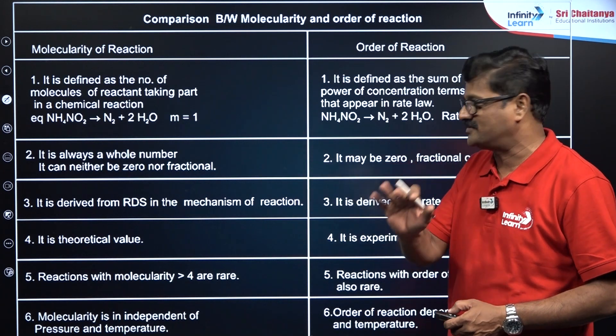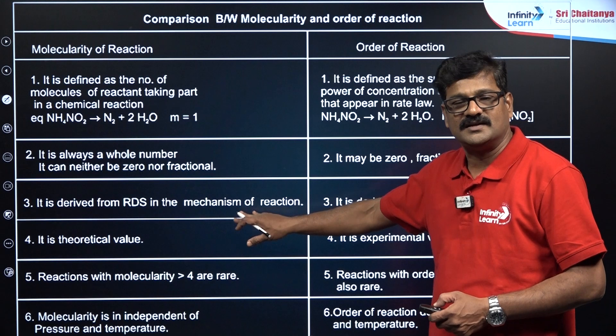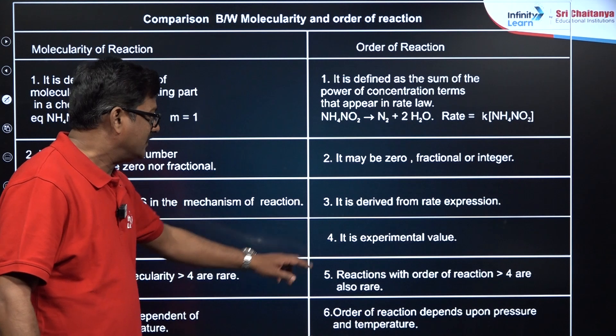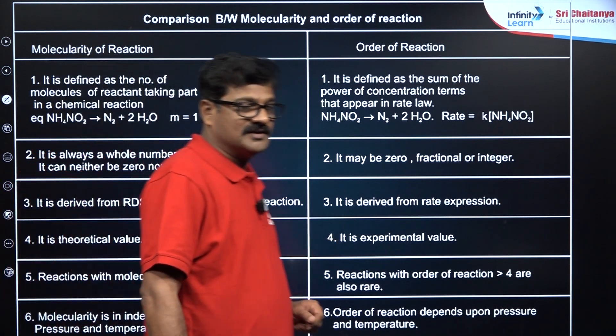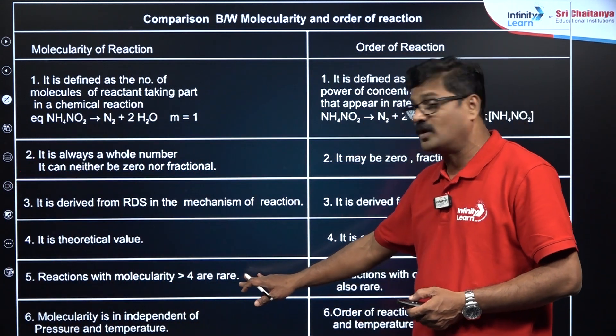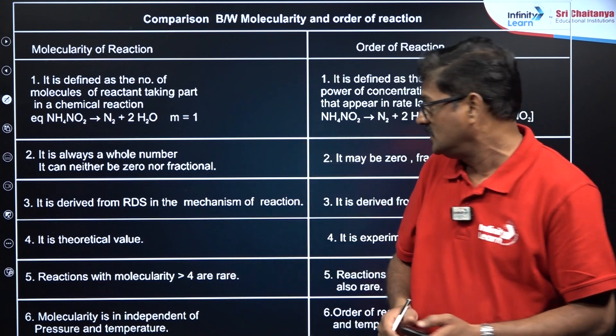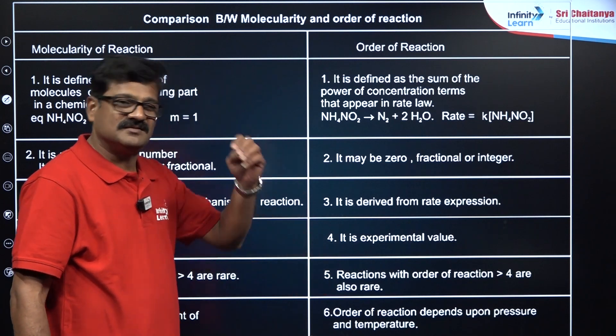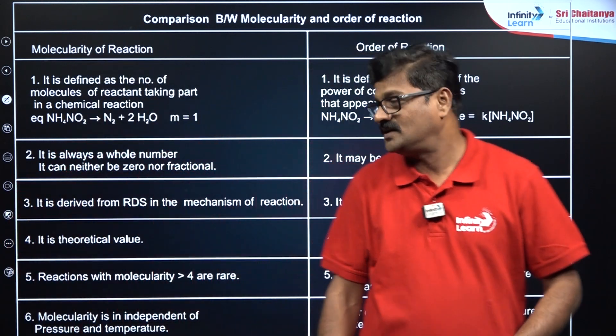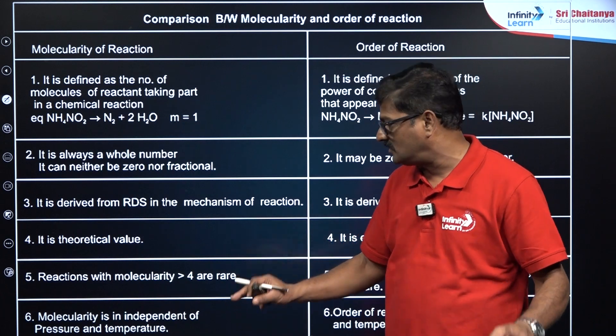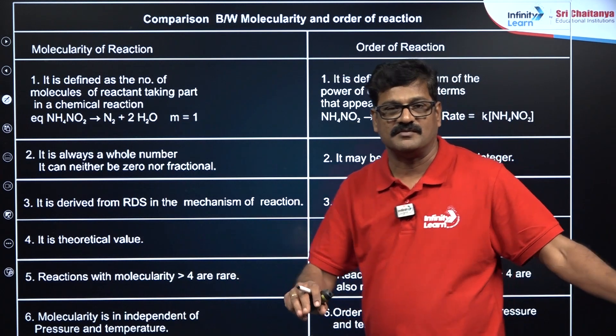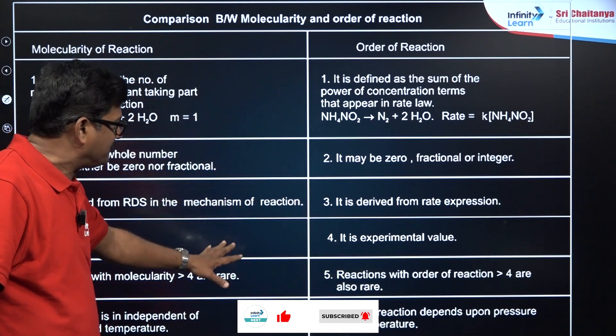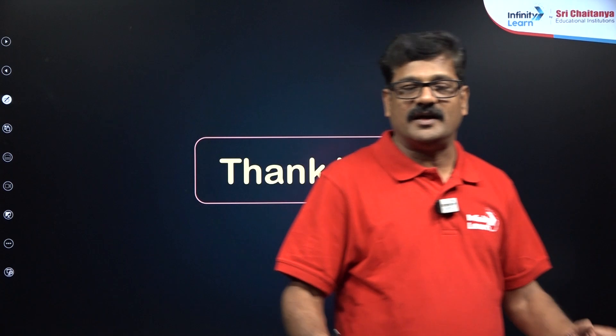Molecularity is derived from the rate-determining step, whereas order is derived from the rate law expression. Order is experimental, molecularity is theoretical. Reactions with molecularity greater than 3 are not possible. Reactions with order greater than 4 are possible but rare. Molecularity is independent of factors like temperature or pressure, but order can change if pressure and temperature change. These are the six differences between order and molecularity.